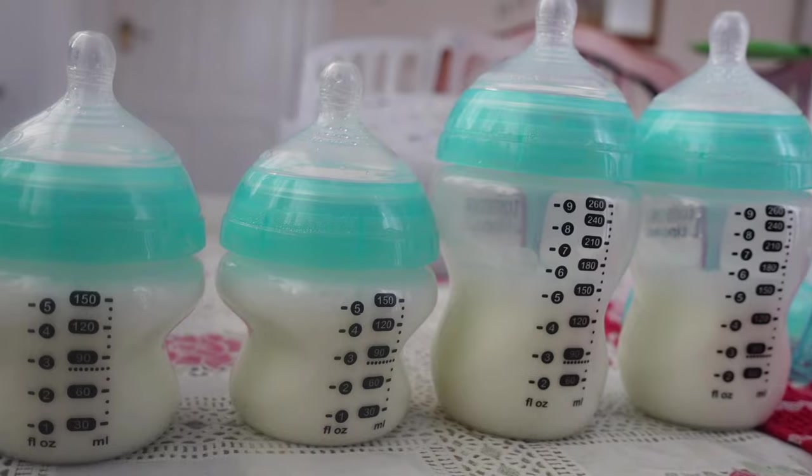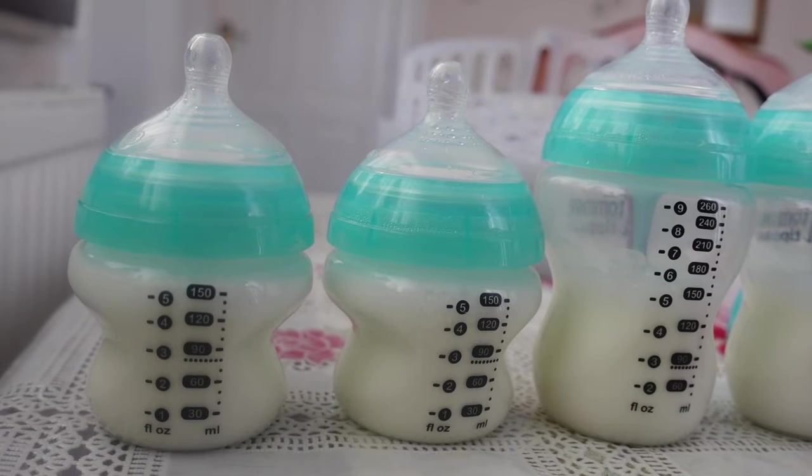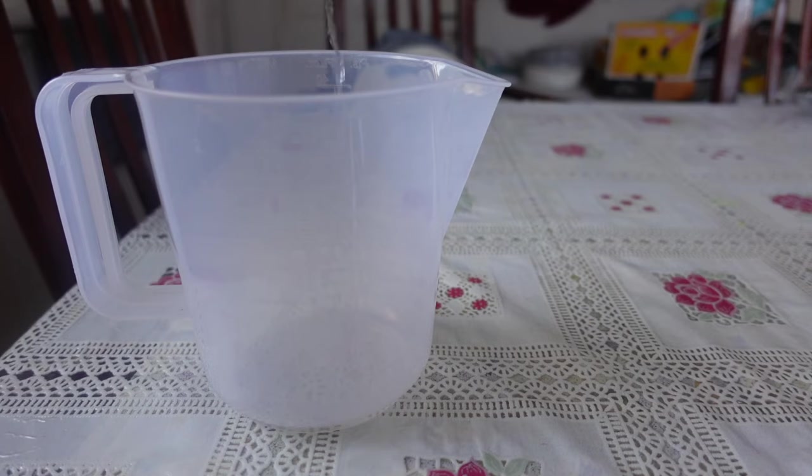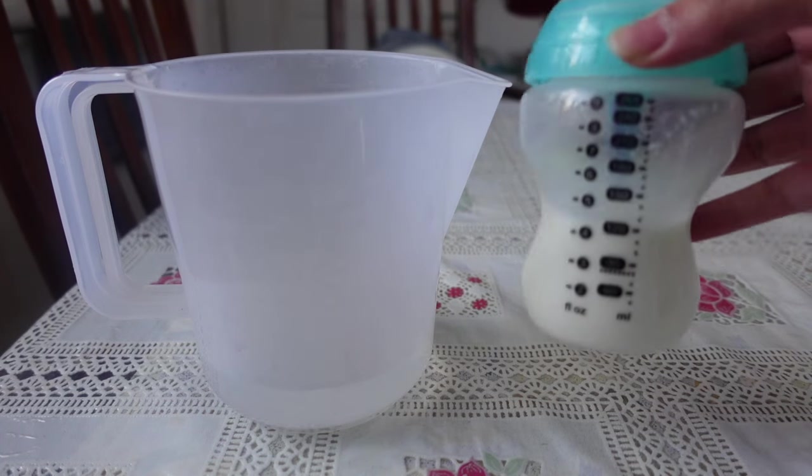They last up to 24 hours in the fridge, so whenever Ann is ready for a feed all I do is warm the kettle up, put the warm water into a jug, and then grab a bottle from the fridge and put that straight into the jug.